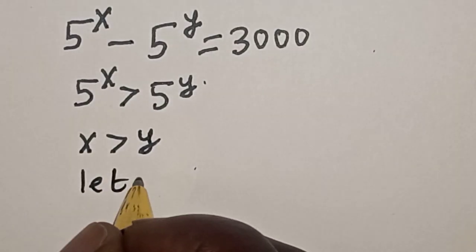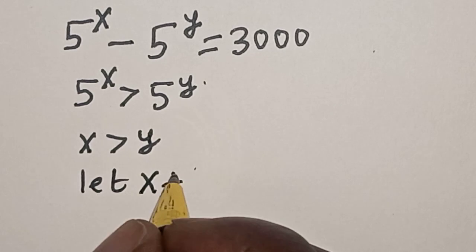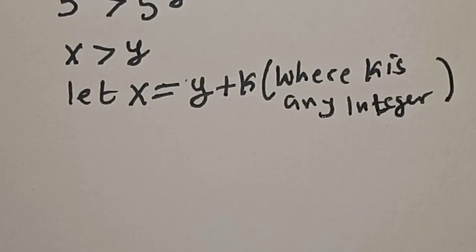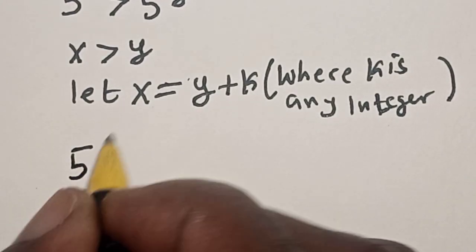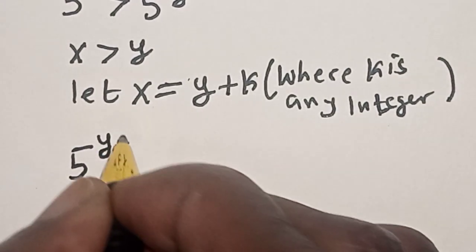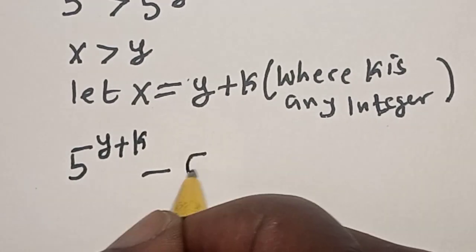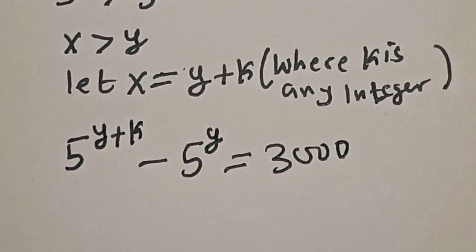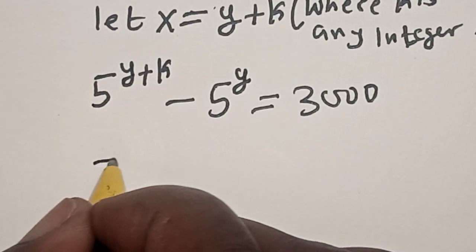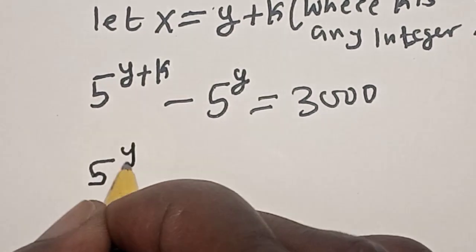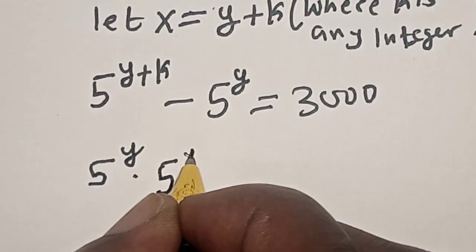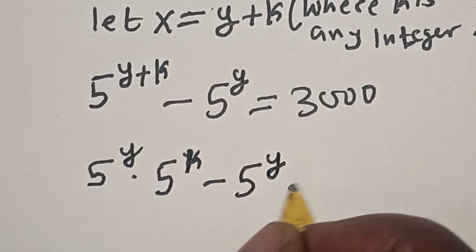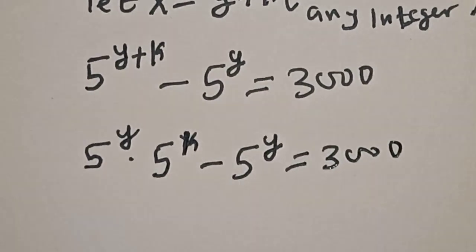Let x equal y plus k. Then we have 5 raised to power y plus k, minus 5 raised to power y, is equal to 3,000. This becomes 5 raised to power y multiplied by 5 raised to power k, minus 5 raised to power y, is equal to 3,000.